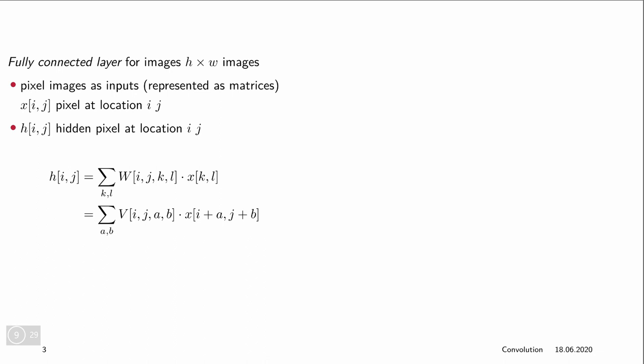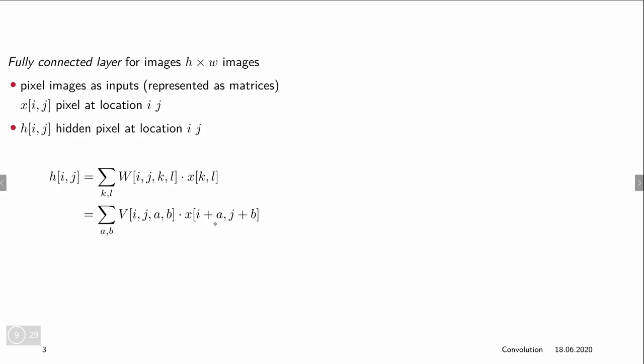Another way to write this is to say that we introduce a matrix V which really has exactly the same values as W but rearranges them such that we can replace k and l by offsets. Basically, the i,j,a,b-th entry of V connects the i plus a-th and j plus b-th entry in x with h_i,j.